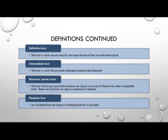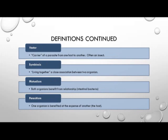The different types of hosts include the definitive host, in which sexual maturity and reproduction of the parasite takes place. An intermediate host is one where an essential stage of development occurs but does not reach sexual maturity. A reservoir or carrier host harbors a parasite in nature and serves as a source of infection for other susceptible hosts, showing no signs or symptoms of disease. A paratenic host is an accidental host that serves as a holding place for the parasite. A vector carries a parasite from one host to another and often includes an insect or arthropod.